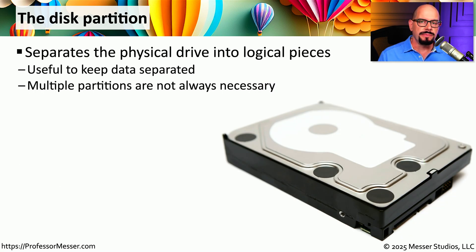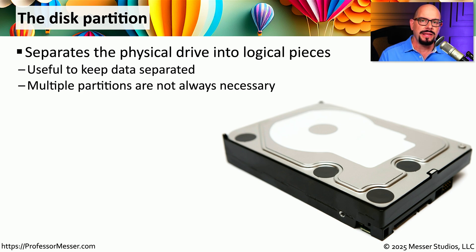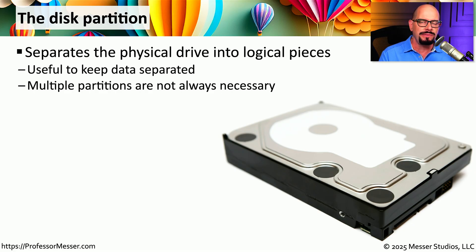Before we can install an operating system, we need to create a logical section of your storage drive that will be designated as a place to keep data. This is referred to as a disk partition. Some operating systems prefer having multiple partitions on a drive; others may use one single large partition. Often you may want to set up separate partitions just to keep data separated on that storage device. The operating system commonly creates a hidden recovery partition during the installation process itself, so once you reboot the system, you may see the OS as one large partition but there is an additional hidden partition for recovery.